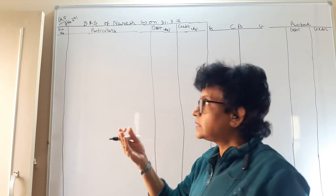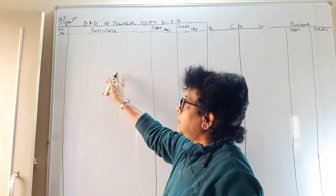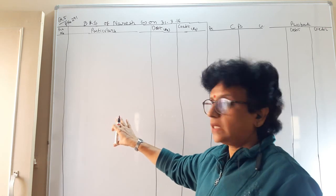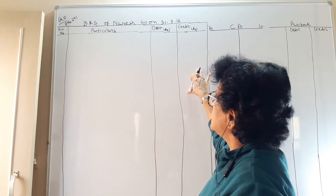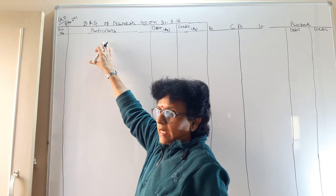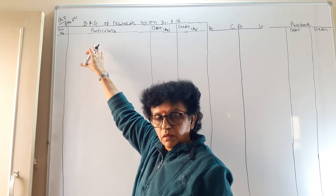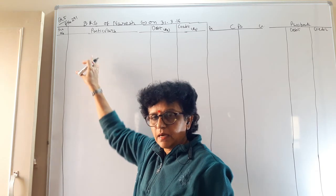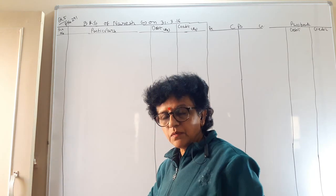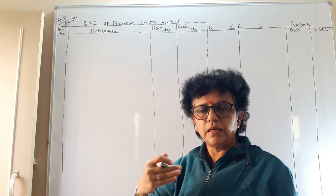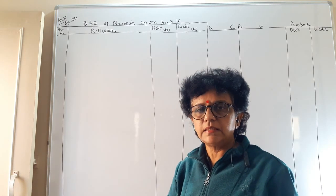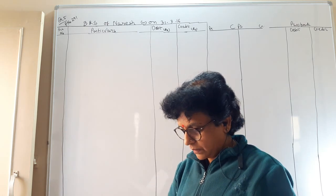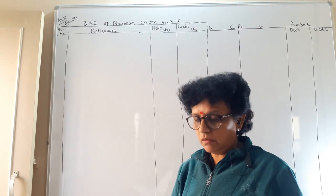It is a statement, so it is 'as on.' The columns are serial number, particulars (meaning the reason), then debit rupees and credit rupees. BRS questions start with any one of the book balance or overdraft as given in the example, and always end with another book balance or overdraft as the answer. Let us start with question number 5, page number 291 of your textbook.